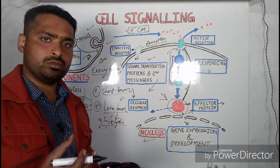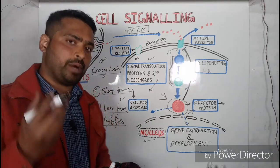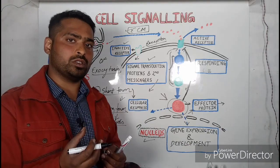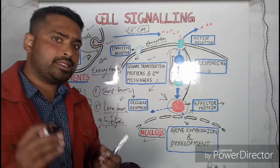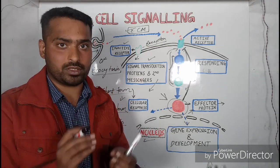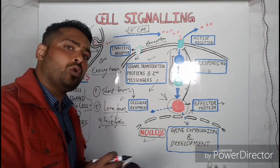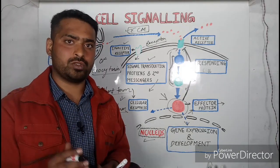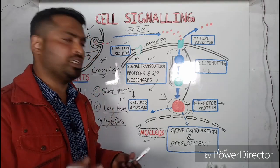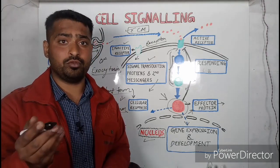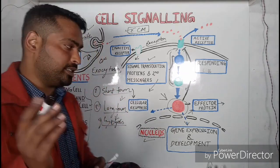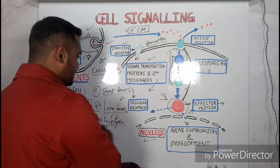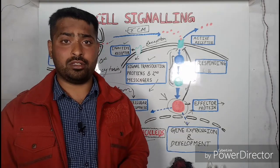An example of short-term metabolic response is glycolysis — the conversion of glucose to pyruvate. When there is a need of energy, that is ATP, we switch to glycolysis, and when this energy need is fulfilled we stop glycolysis. There are many more examples like the TCA cycle, pentose phosphate pathway, and when we need fatty acid synthesis or breakdown we switch to beta oxidation.